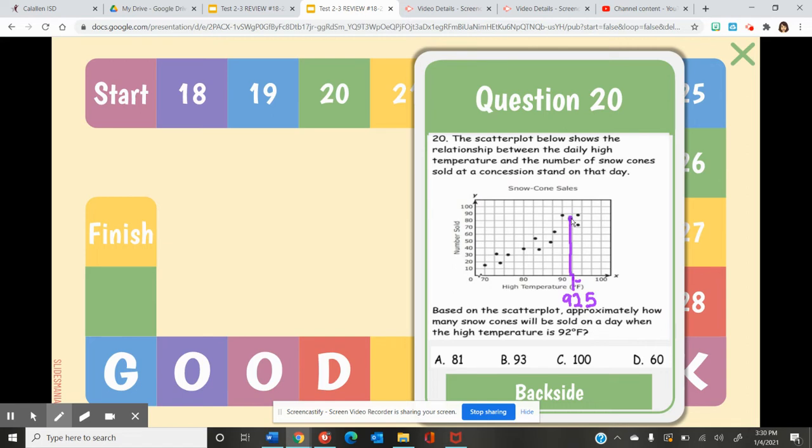So to find that number of snow cones, all I'm going to do is go to my y-axis and see what that number is at about. When I do that, this number is slightly above 80. So that being said, if it's slightly above 80, our answer should be A at 81.